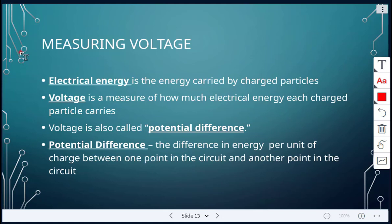All right, next, measuring voltage. Voltage, so electrical energy, this is the energy that's carried by charged particles. And when we talk about voltage, this is the measure of how much electrical energy each charged particle carries. And potential difference is another term for voltage. So potential difference is the difference in energy per unit of charge between one point in the circuit and another point in the circuit. And this we'll take a look at when we do the lab.